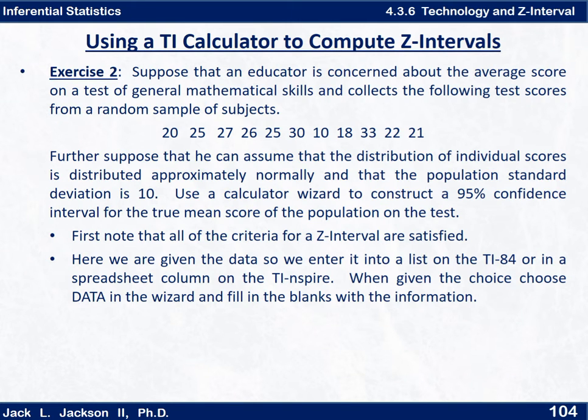Well remember the first thing you have to do is make sure that all the criteria for z interval are satisfied. It tells us that even though the sample size is small, the individual scores are approximately normal so the distribution of sample means will be approximately normal even though the sample size is only I think 10 here. And we need to know the population standard deviation and we're wanting a z interval for the mean. So we got all three criteria done. Now this time we need to actually type this data into the calculator. So you're going to go to stat edit and type that in and then we run the wizard just like before. So if you haven't done this yet go ahead and do it now.